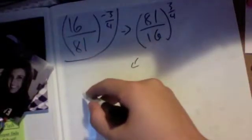Then you write what you were saying earlier about creating a radical and putting this into it. So it's gonna be 81 over 16 but to the fourth root of it.